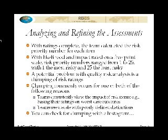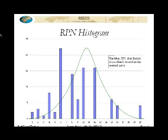Another thing that can happen is that the distinctions on the scale of likelihood ratings or impact ratings are not well-defined or not well-internalized. We want to check to see if that's happening. It's very easy to do when you've captured risk items and their ratings in a spreadsheet, because you can create a histogram showing the number of risk items associated with each rating. For example, about two risk items had an RPN of one, six had an RPN of 15, and four had an RPN of 16.